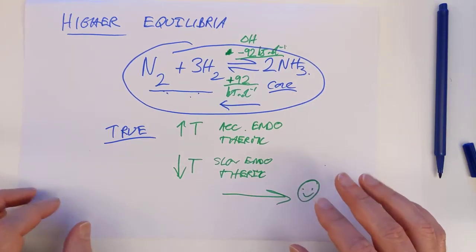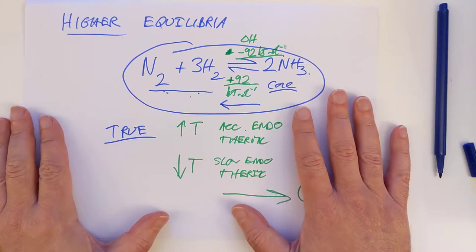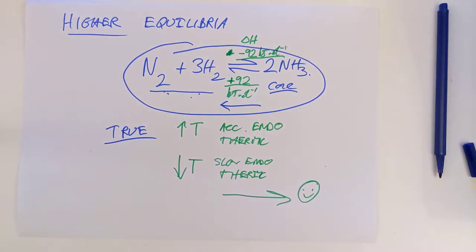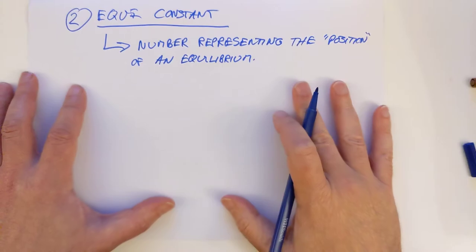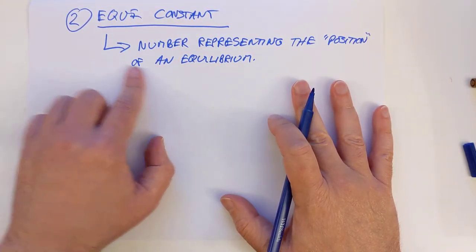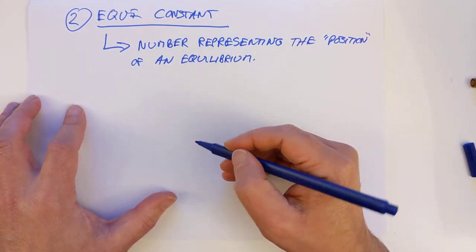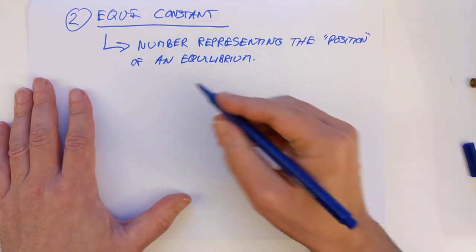That was a revisit on the only actual true way to shift the equilibrium position, left or right, from higher. I know we said about pressure and changing, adding or removing a chemical, and they do to a certain extent, but as far as advanced higher is concerned, this is a famous trick question. Let's have a look at the second concept I wanted to do today, which is to introduce an equilibrium constant, a K value.